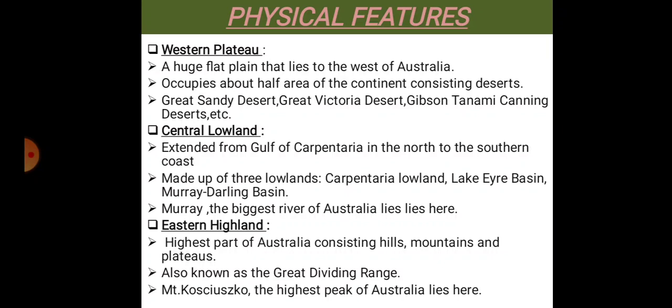The Central Lowland is another feature of Australia, which extends from the Gulf of Carpentaria in the north to the southern coast. This lowland consists of three major sub-regions: the Carpentaria Lowland, the Lake Eyre Basin, and the Murray-Darling Basin. The Murray, the biggest river of Australia, lies in this region.